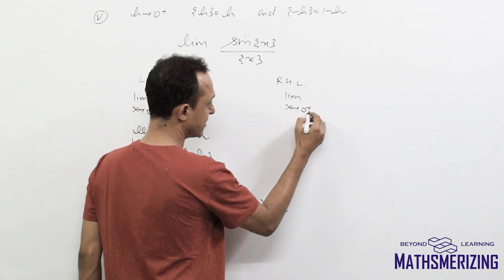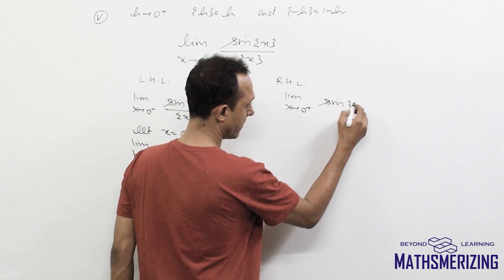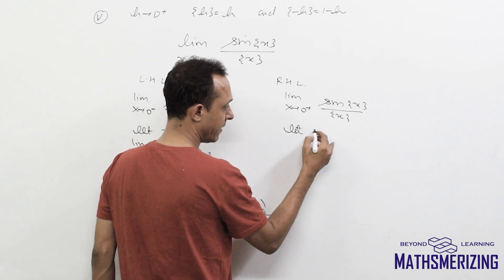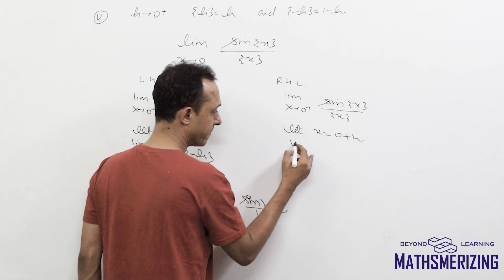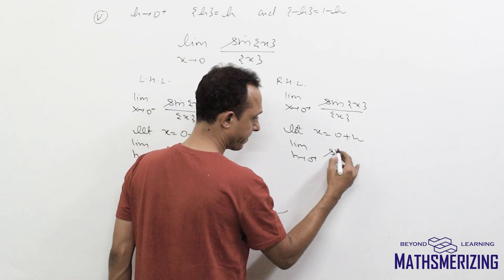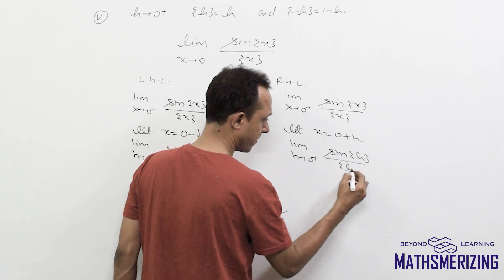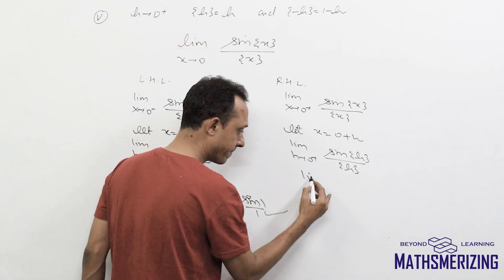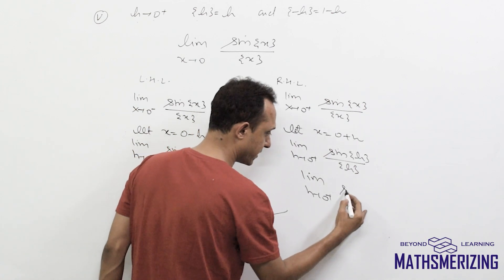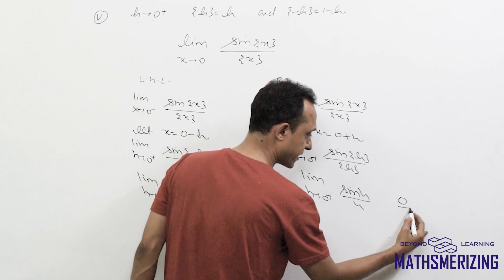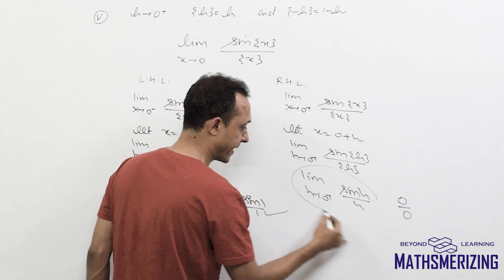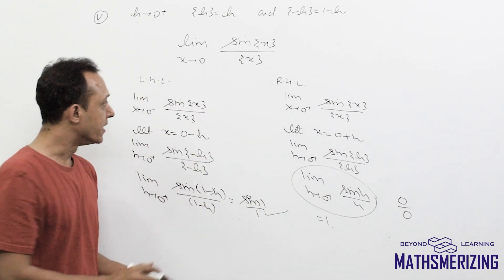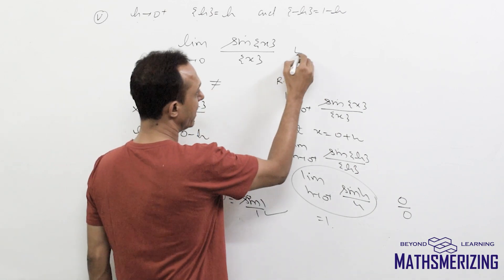For the right-hand limit: let x = 0 + h, giving lim(h→0⁺) sin({h})/{h} = lim(h→0⁺) sin(h)/h. This is a 0/0 indeterminate standard limit, so the right-hand limit equals 1. Since the left-hand limit (sin 1) ≠ right-hand limit (1), the limit does not exist.